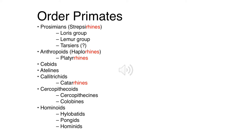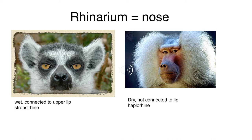Within our Haplorhini we have two other divisions: our Platyrrhini and our Catarrhini. Our Platyrrhini are our New World monkeys living in the Americas, and our Catarrhini are our Old World monkeys living in Africa and Asia, plus our hominoids. This rhinies terminology is going to be a quick and easy way for you to visually categorize primates.